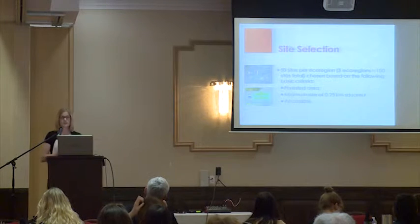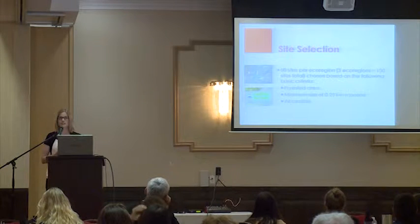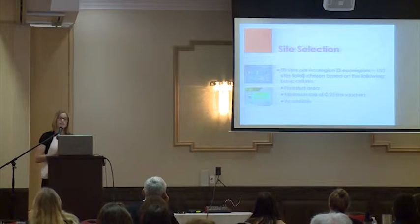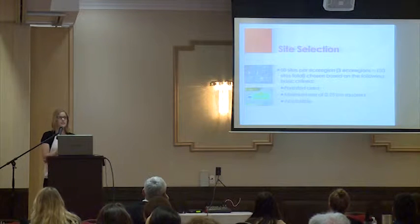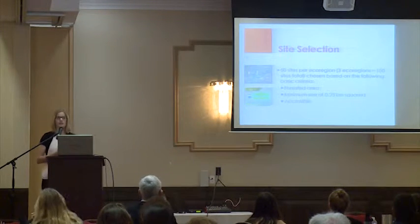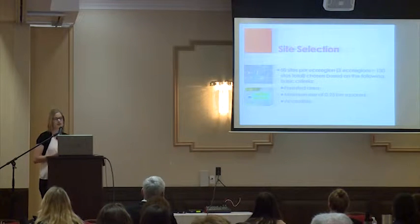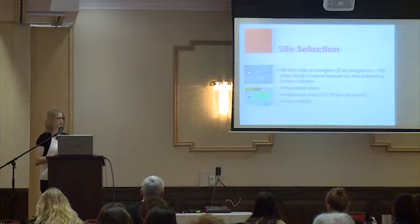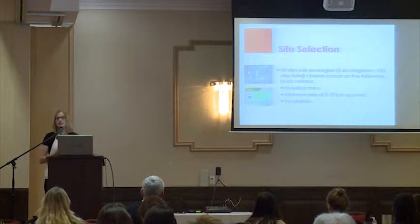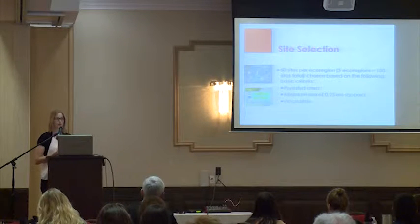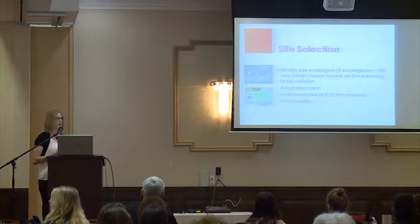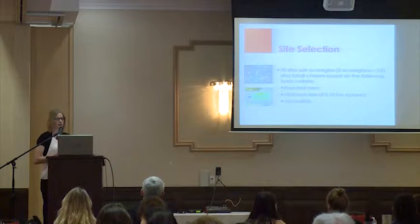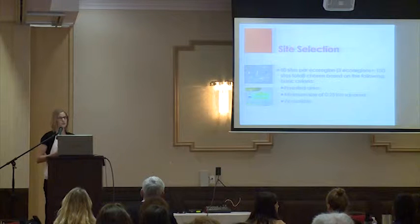For our research we endeavored to visit 50 sites over three ecoregions in central and southern Ontario, for a total target of 150 sites. We chose these three ecological divisions because they represent more distinct areas where the climate is sufficient to support the life cycle of the black-legged tick. The basic criteria for site selection required a forested area, because the black-legged tick needs that protection against desiccation and the vegetation to climb up to find a blood meal. Minimum site size and accessibility were based on our ability to conduct research there.